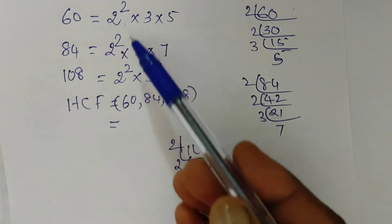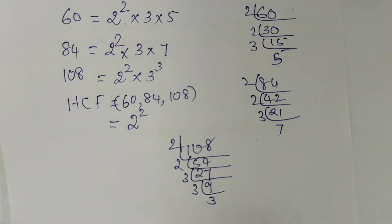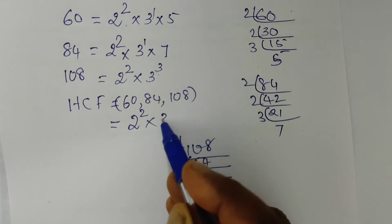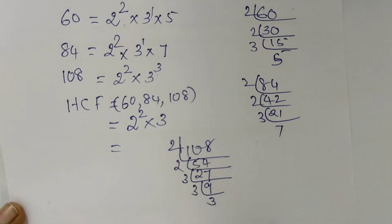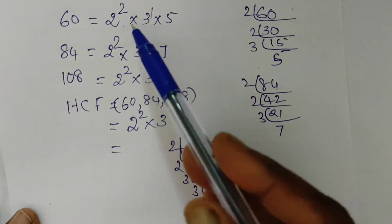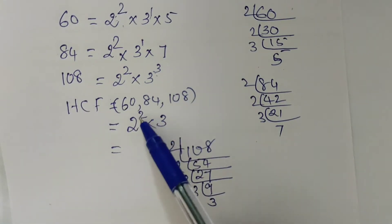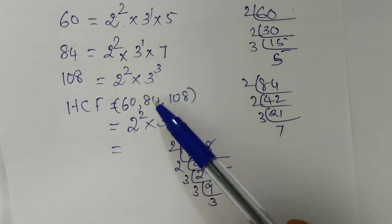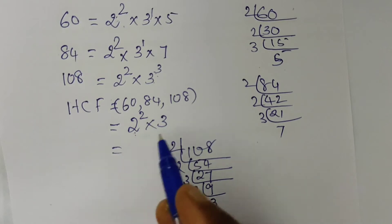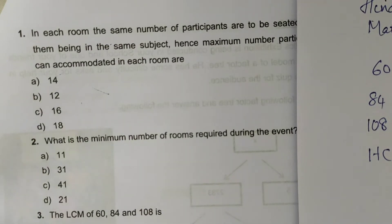The common prime factor is 2, with the same power. Then 2 squared. The next common factor is 3; the lowest power of 3 is 3 to the power 1. HCF is the product of common prime factors with the lowest power. So 2 squared is 4, and 4 into 3 is 12. Option B is the correct answer.